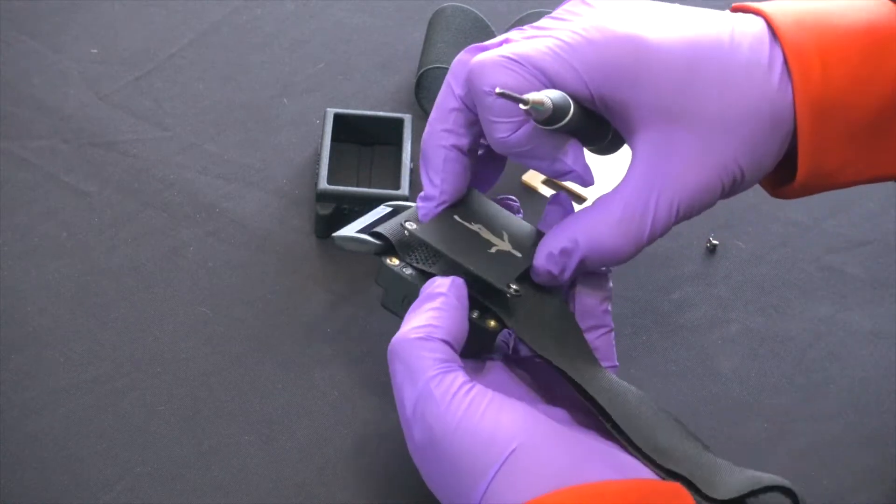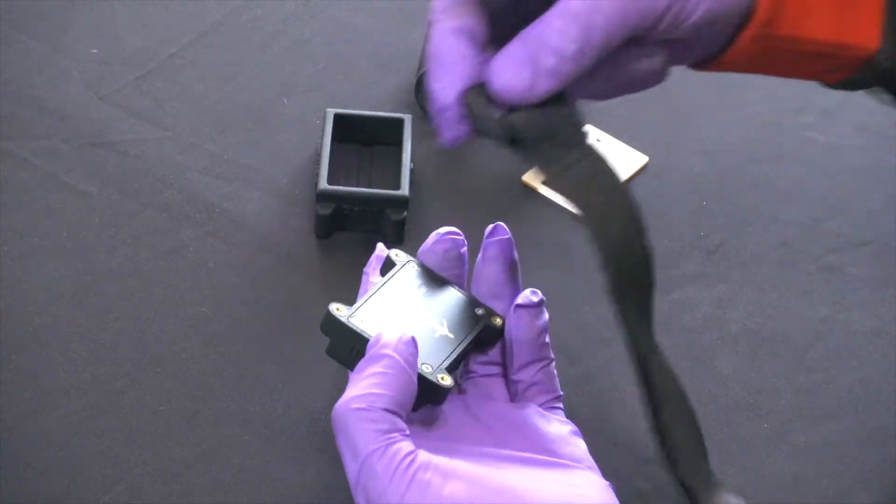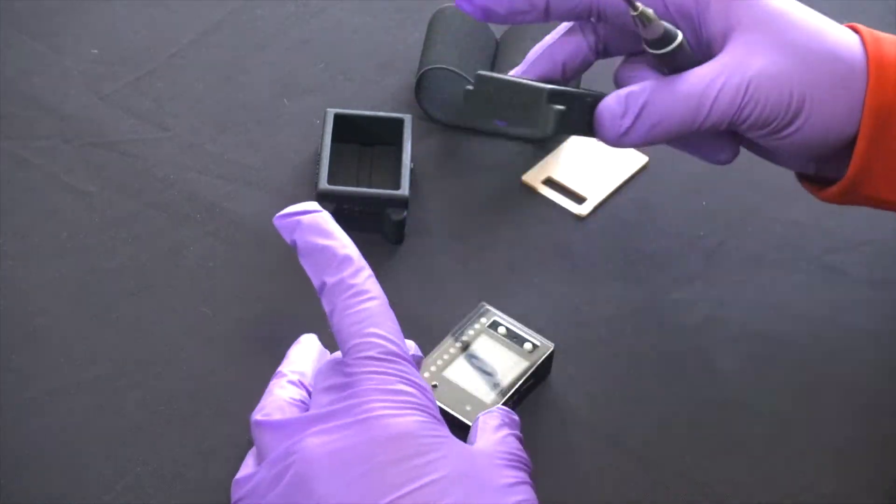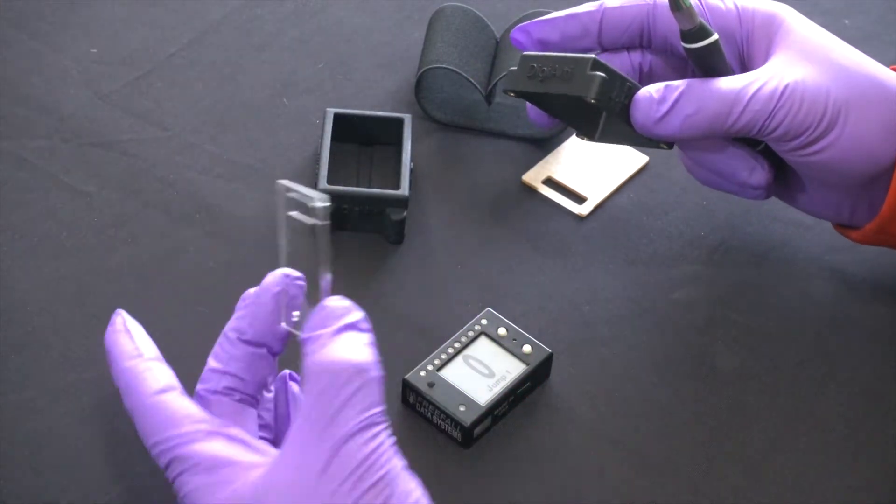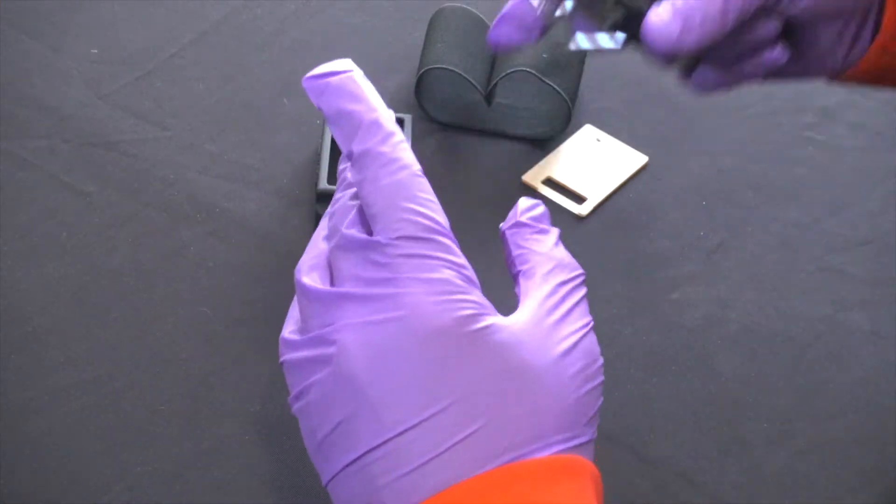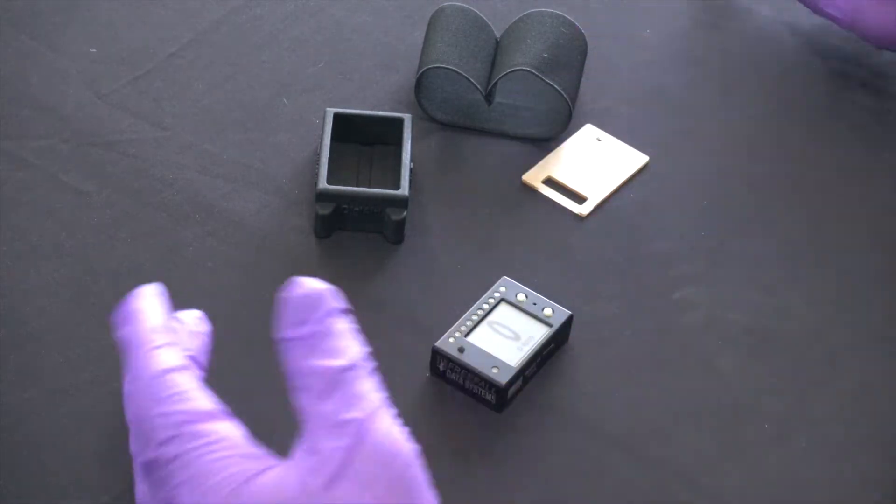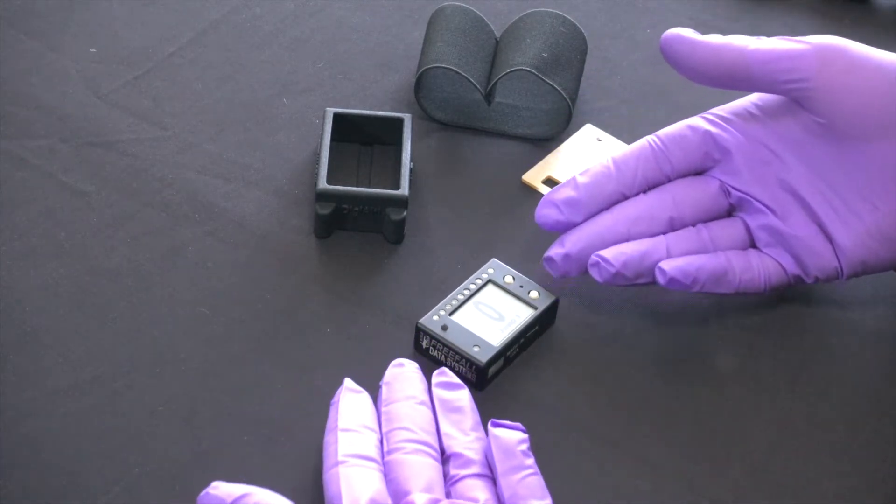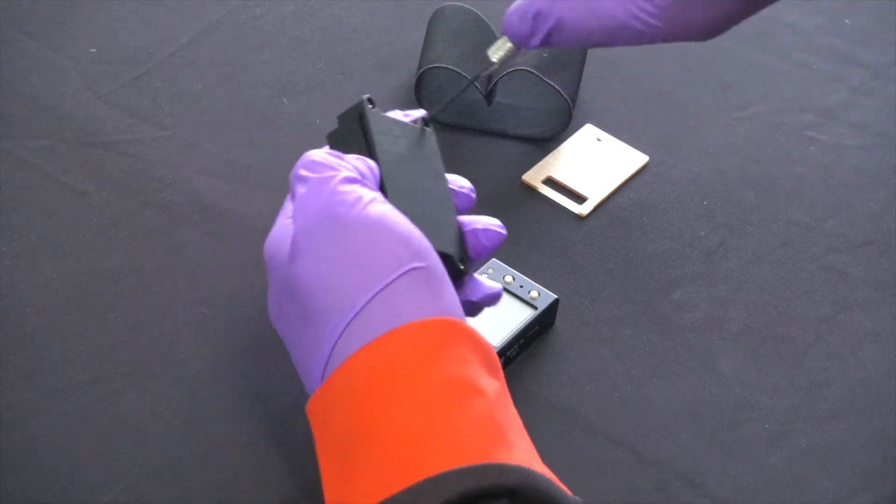So let's go ahead and just set this aside, don't need that. You can either replace this if it needs replacing or keep it and put it in the new mount, but let's go ahead and set everything aside and start fresh here. Everything looks good. You could clean this up with a microfiber cloth or some lens paper if you wanted to at this point.